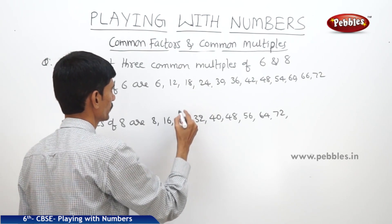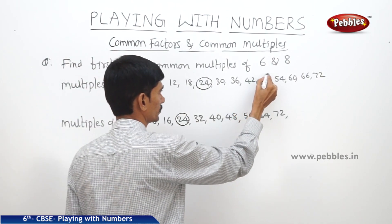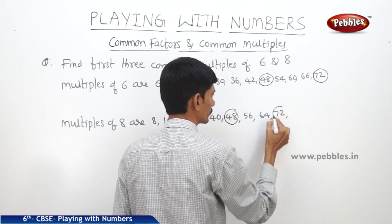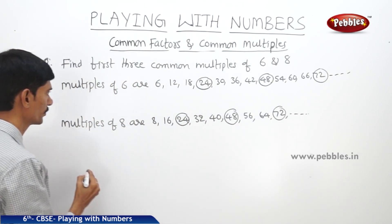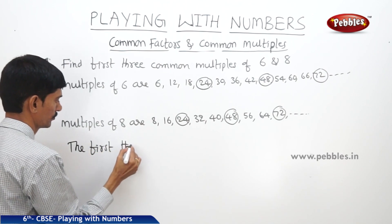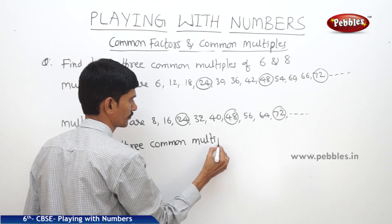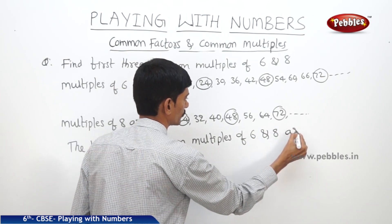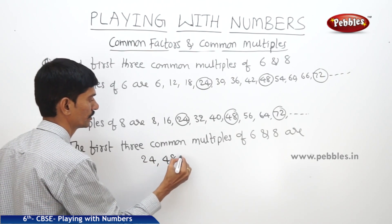The first common multiple of 6 and 8 is 24. The next one is 48 and the next one is 72. So the first 3 common multiples of 6 and 8 are 24, 48 and 72.